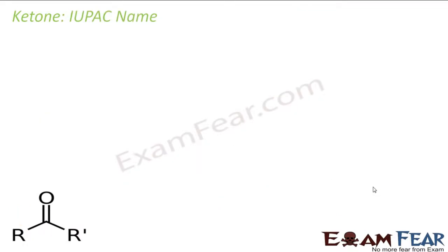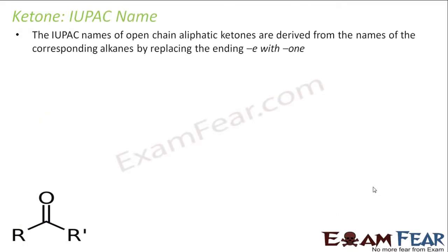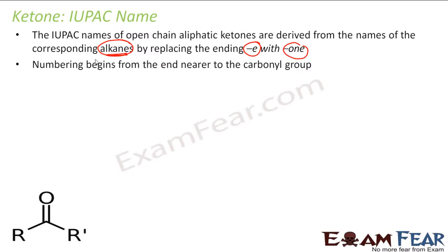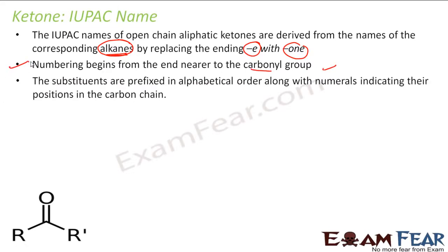Now let's learn the IUPAC name of ketone. IUPAC name is generally derived from alkanes. You take carboxylic acid, aldehydes, ketone, alcohol - it's all derived from alkanes. In this case, E is replaced with O-N-E. The numbering begins from the end nearer to the carbonyl group, same as we had for aldehydes. The substituents must be written in alphabetical order.